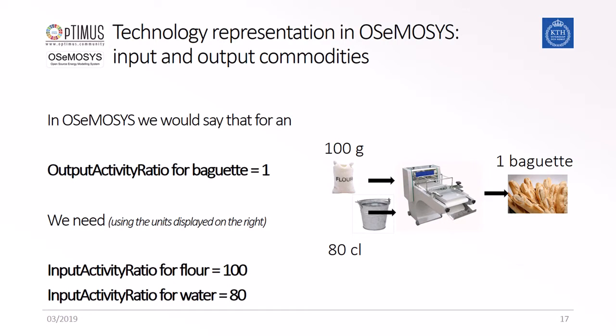This would translate into OSeMOSYS as an output activity ratio of one for the technology baking machine with the fuel baguette. For the input activity ratio, this will require 100 grams of flour and 80 centiliters of water, which are our fuels for the technology baking machine.